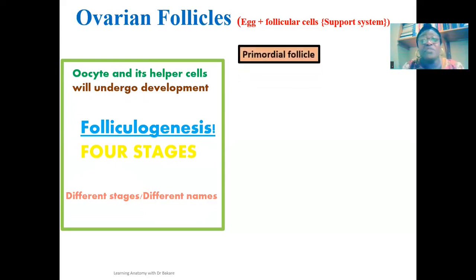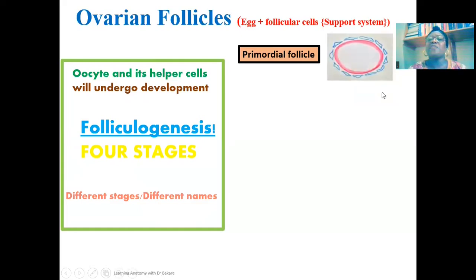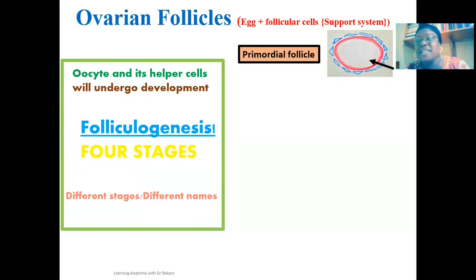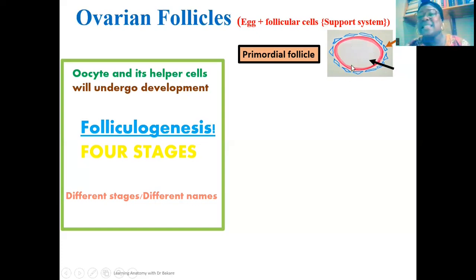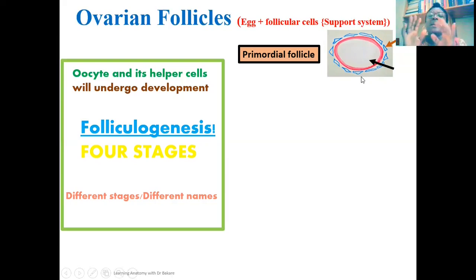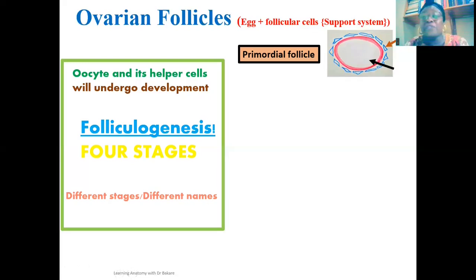The initial stage is the primordial ovarian follicle. At this stage, we have the primary oocyte surrounded by a single layer of flat cells. This structural configuration is derived during the embryonic process — this is what the ovary is at birth. The primordial follicle remains at this stage within the ovary until puberty is reached.